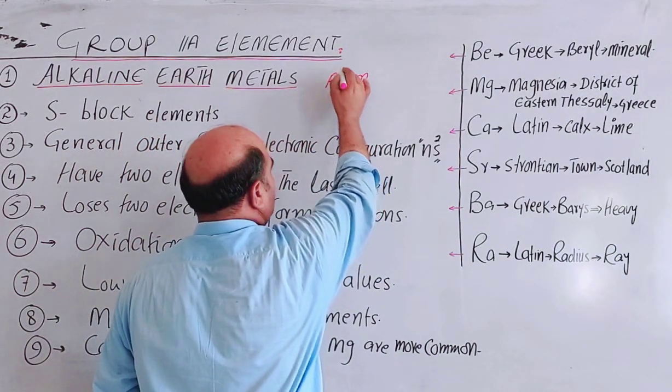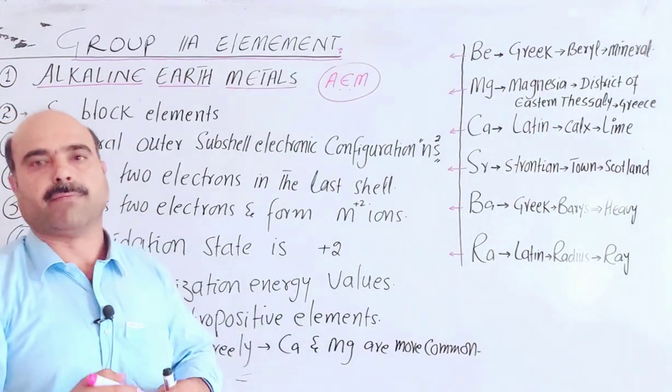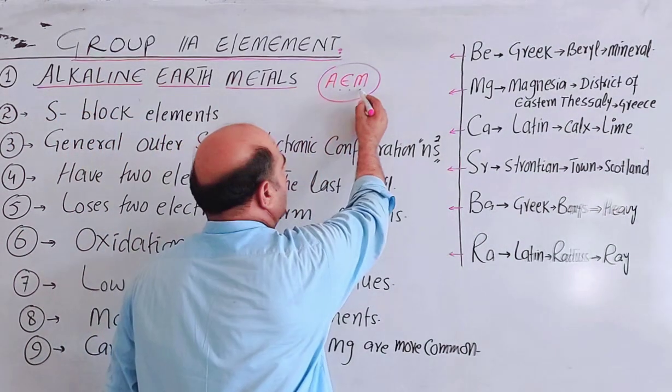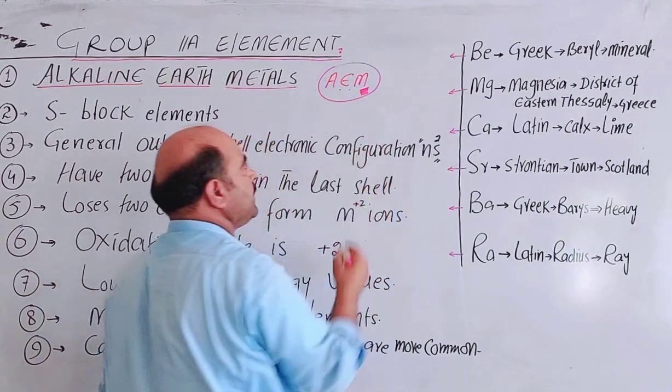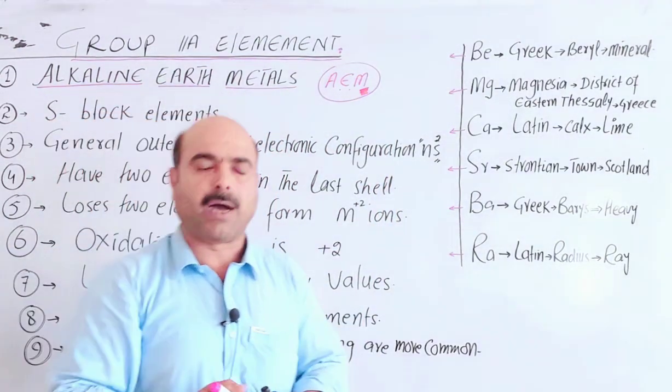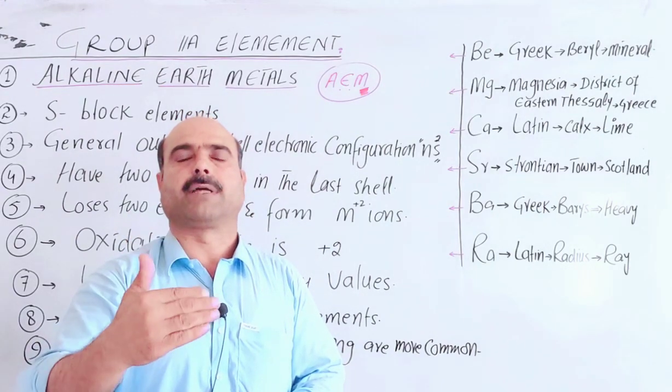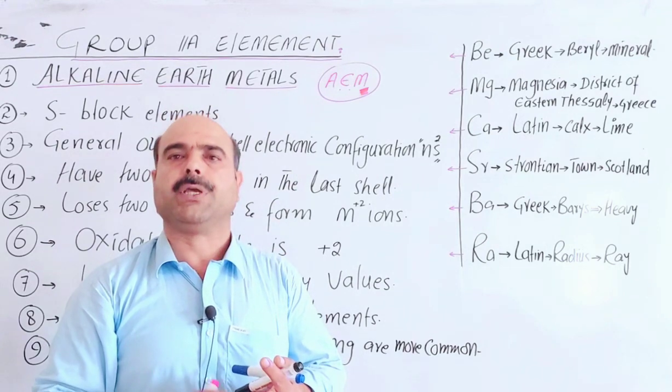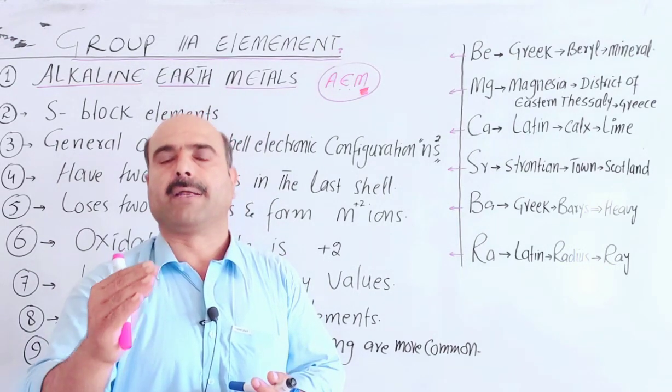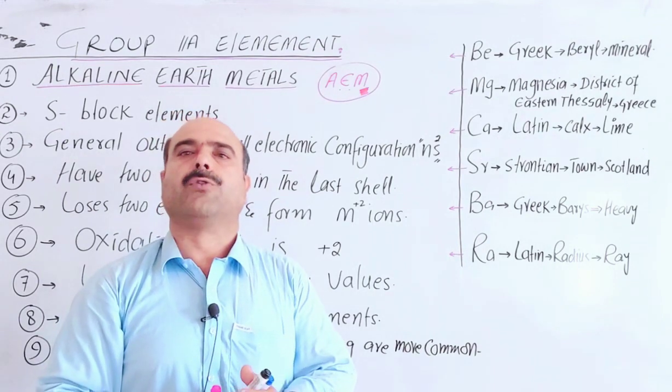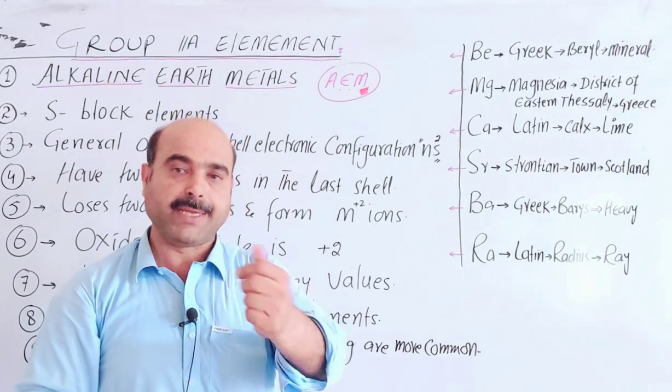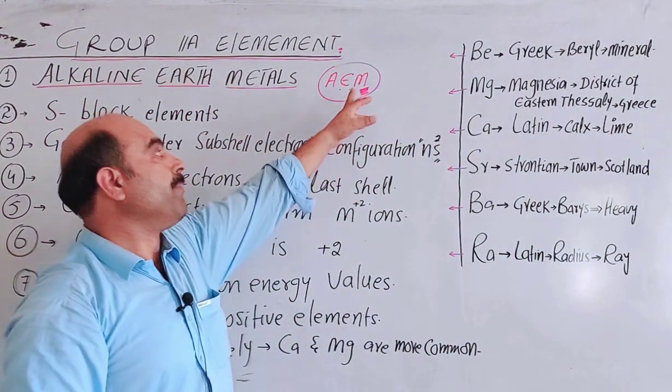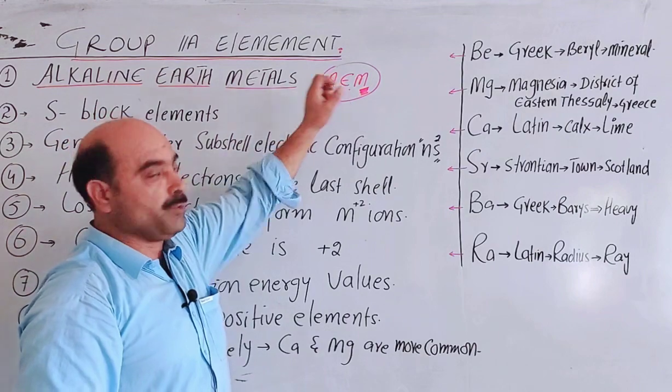Why these are called alkaline earth metals? Metals - all these are metallic in nature. All these are metals with metal character and properties. They are good conductors of heat and electricity, malleable, ductile, and have shiny surfaces.